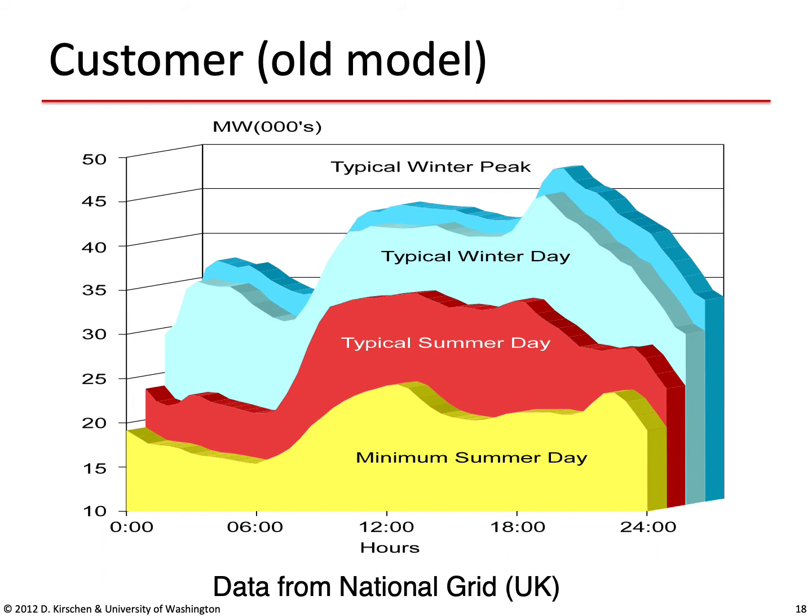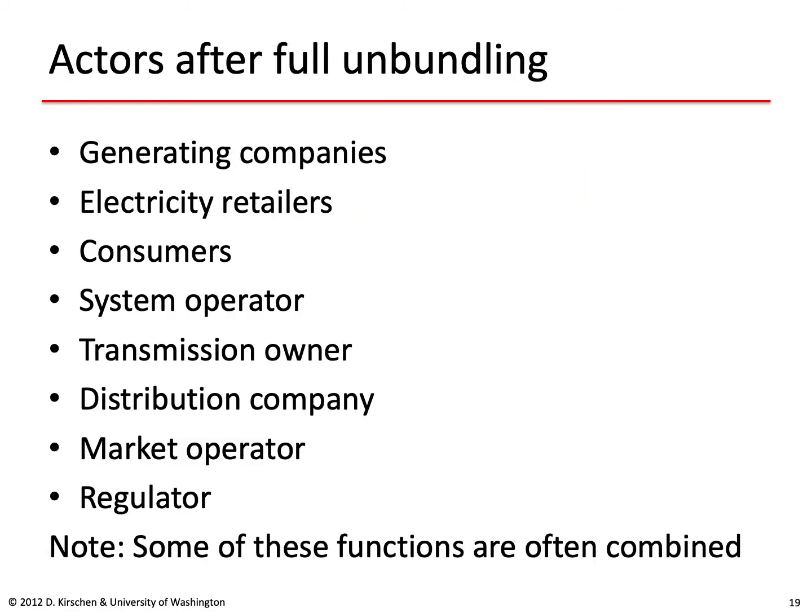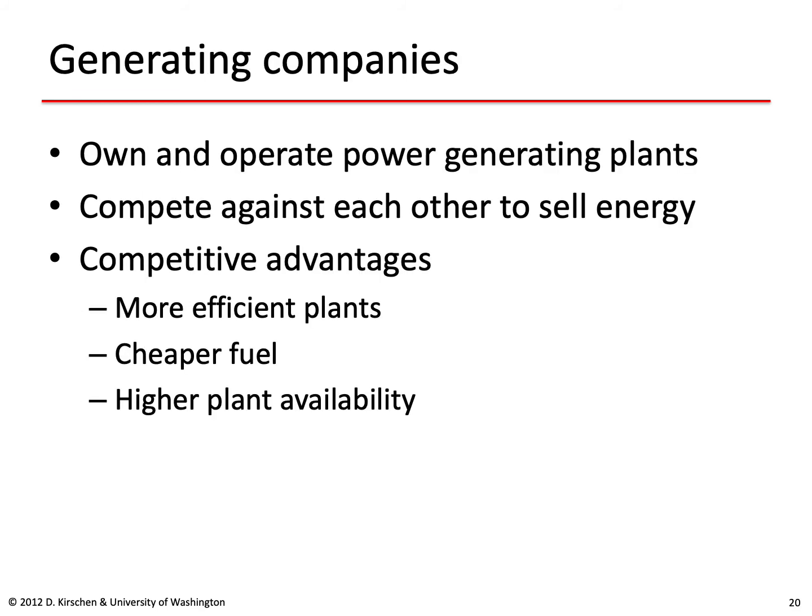This aggregated load profile data from the United Kingdom shows a winter peaking utility, which is why peak loads tend to happen during the winter rather than the summer. After unbundling, instead of one main actor and two bit players, we can have a whole range of actors: generating companies, electricity retailers, consumers, system operators, transmission owners, distribution companies, market operators, and a regulator. That's full unbundling — in practice, some of these functions are often combined into one organization.